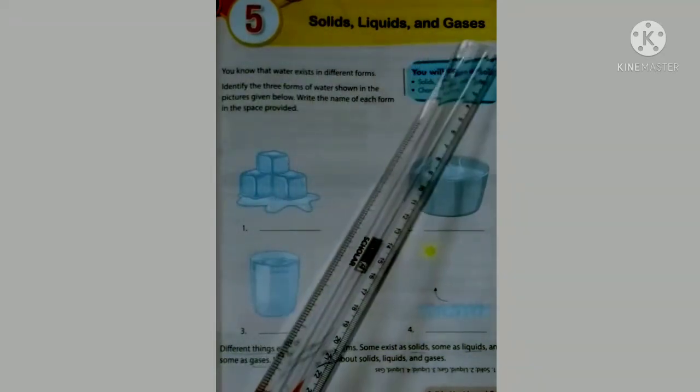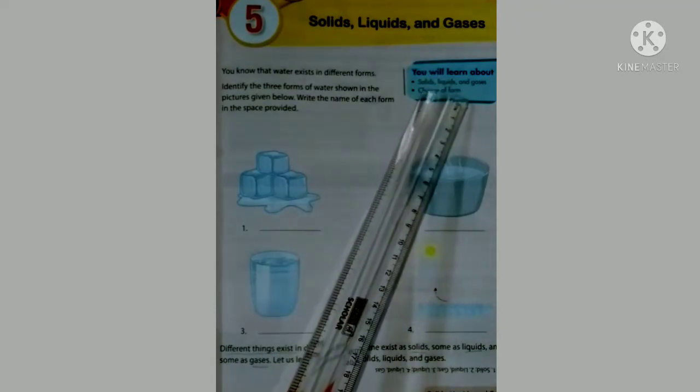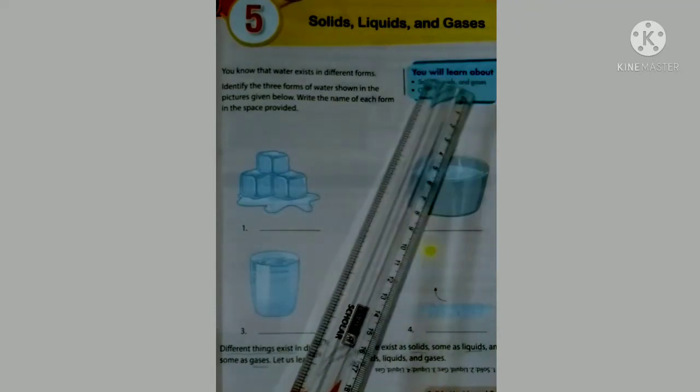Children, take your science book, turn to page number 49, Lesson 5: Solids, Liquids and Gases. In this lesson we are going to learn about solids, liquids, gases, and changes of form. Different things exist in different forms — some exist as solids, some as liquids, and some as gases.